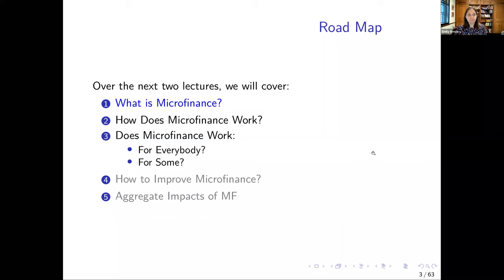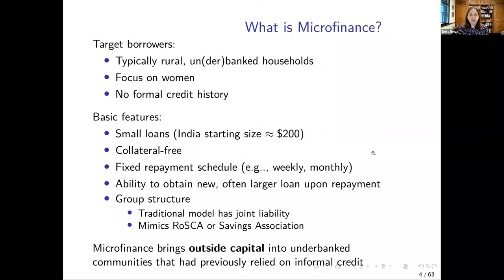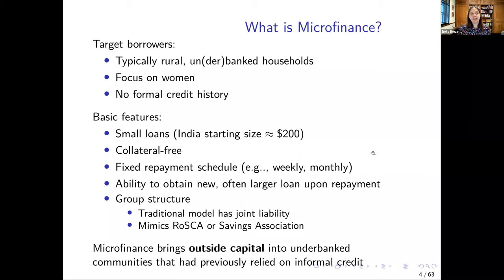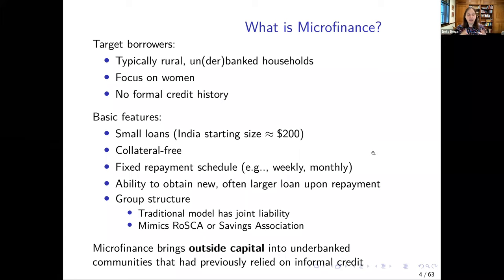First, what is microfinance? I'm going to talk today mostly about the standard Grameen Bank joint liability group model of microfinance. In the years since the early 2000s, when that model was growing and fairly new, there have been a lot of innovations and in different countries microfinance has evolved in slightly different ways. But it's helpful to start with that basic starting point as applied in South Asia. Microfinance typically focuses on a specific kind of borrower — originally a rural borrower who was unbanked or underbanked, with no formal access to credit, and whose access has subsequently expanded.